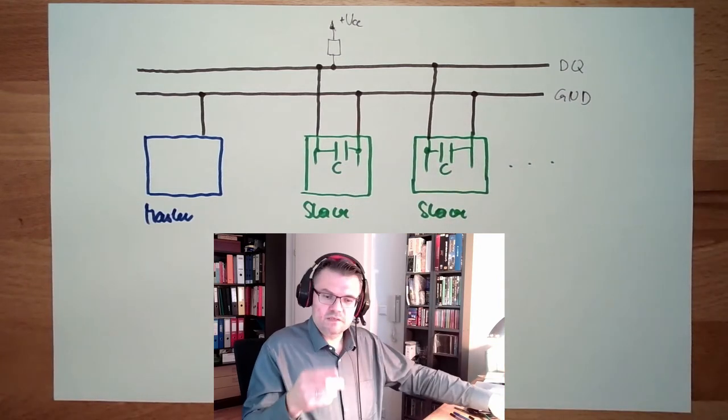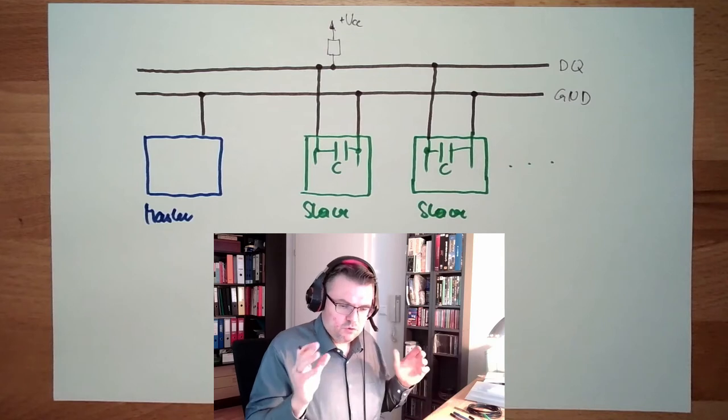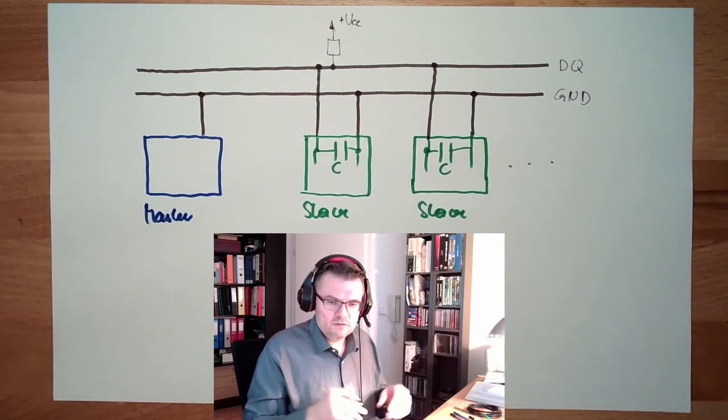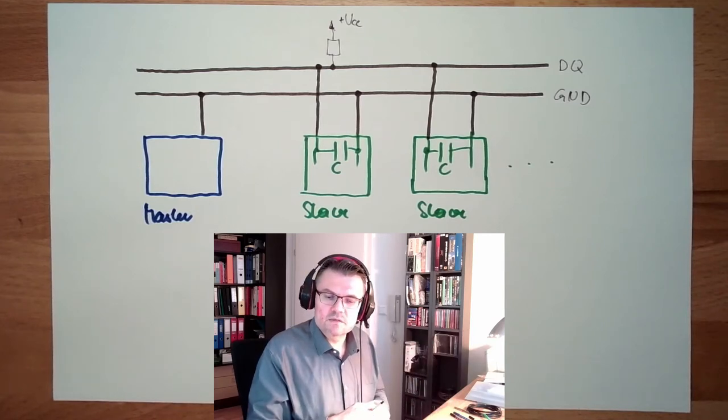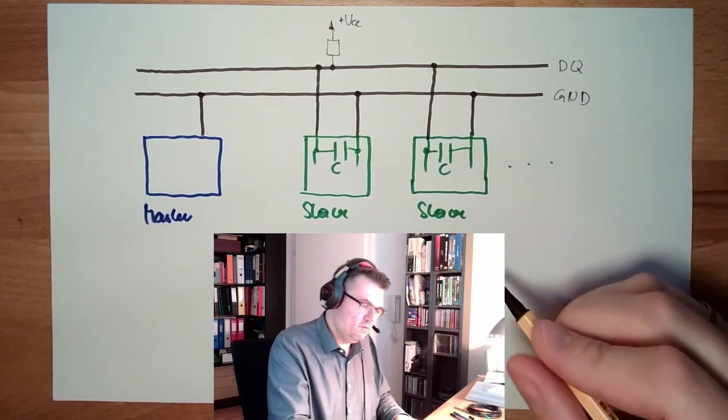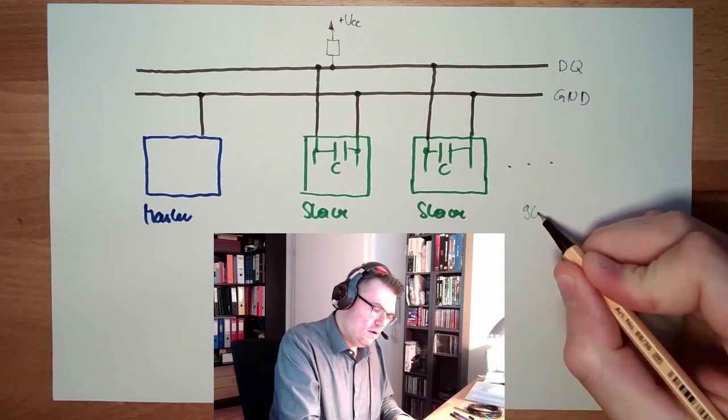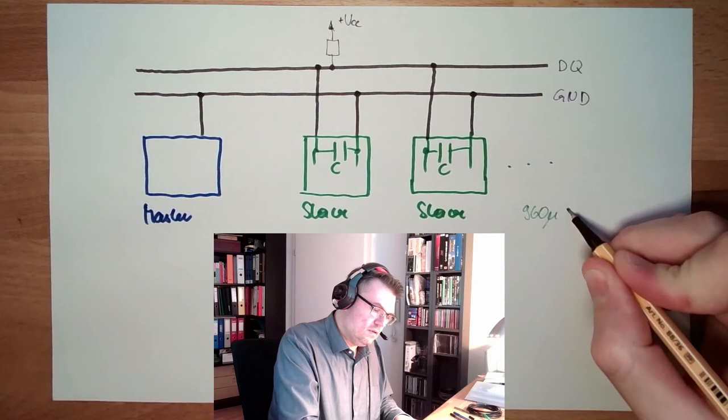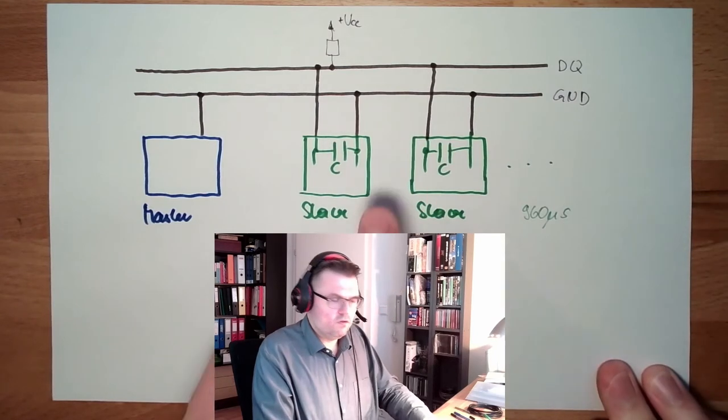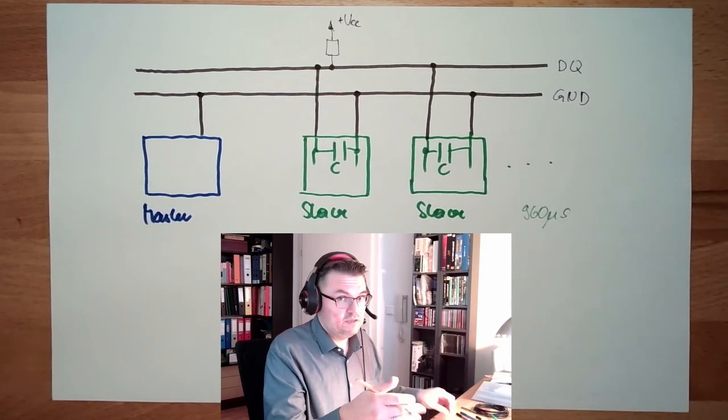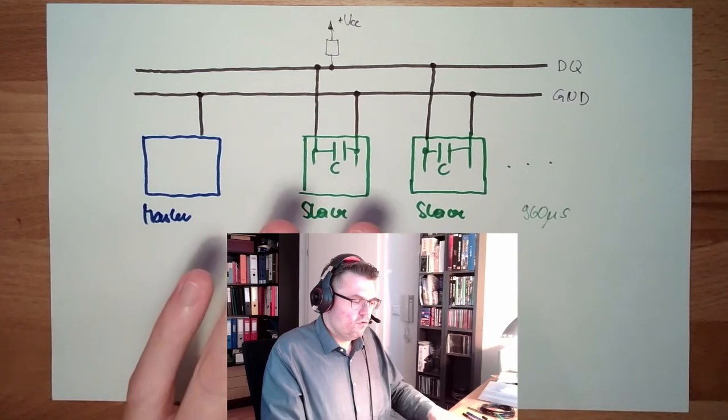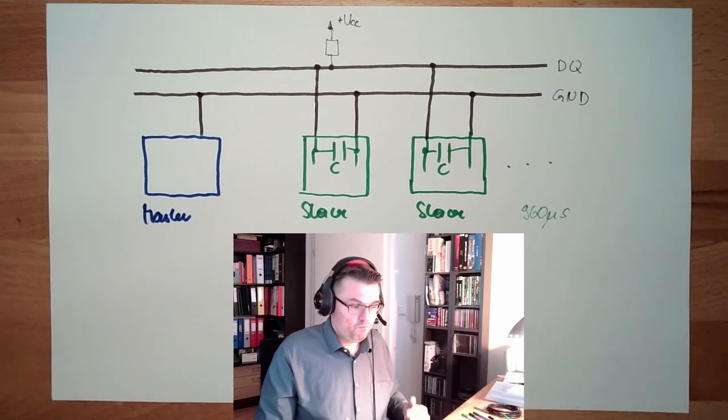The power supply of the slave can even be up to 900, 900 milliseconds, 960 microseconds. This is specific. 960 microseconds. This is how long this capacitor should last, or has to last for power supply.